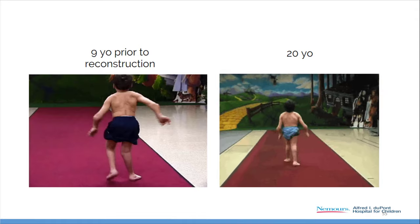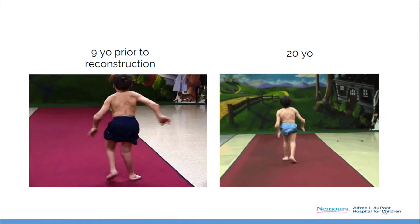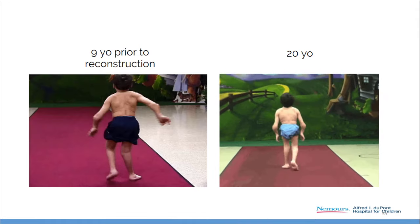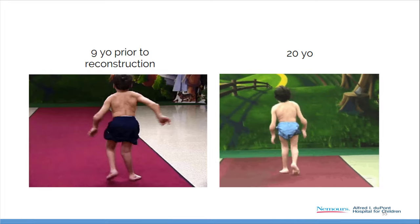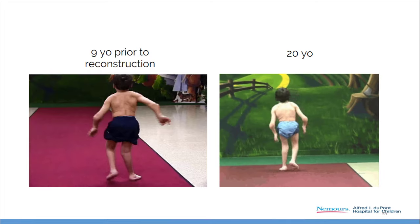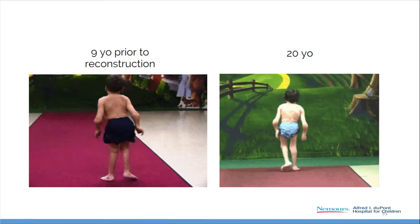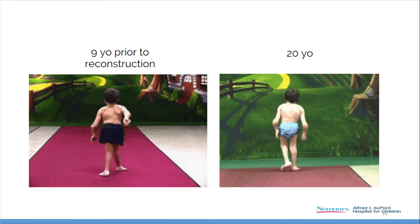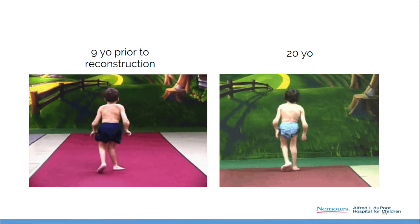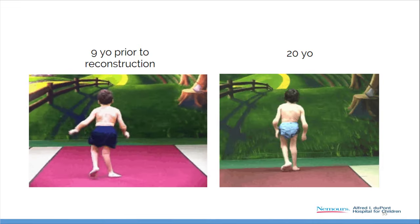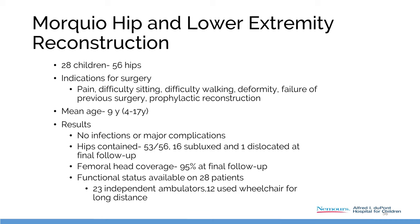This is a 20-year-old with Morquio walking with straight legs — absolutely unheard of. Most severe Morquio patients with severe genu valgum are not walking. We've reviewed our study of 56 hips with very good functional and radiographic results.